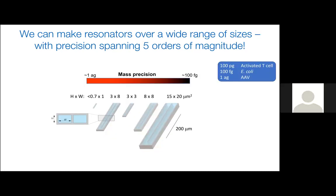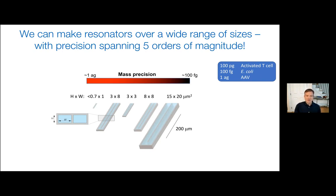Over the years, my lab has made these devices at a wide range of sizes. The mass precision is directly related to the mass of the device itself — the lighter the device, the smaller the mass we can resolve. By doing this, we've been able to span about five orders of magnitude in precision from our biggest to our smallest device.